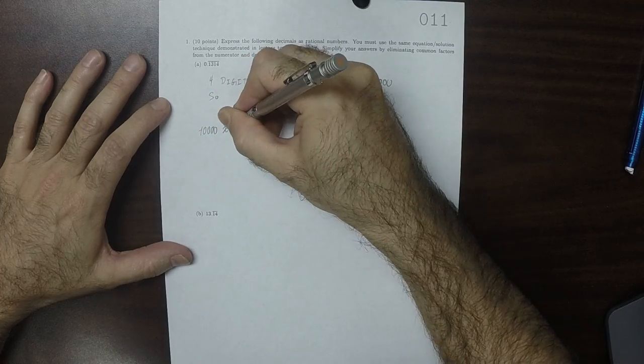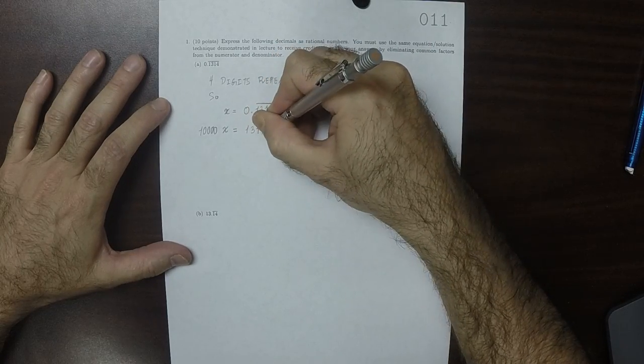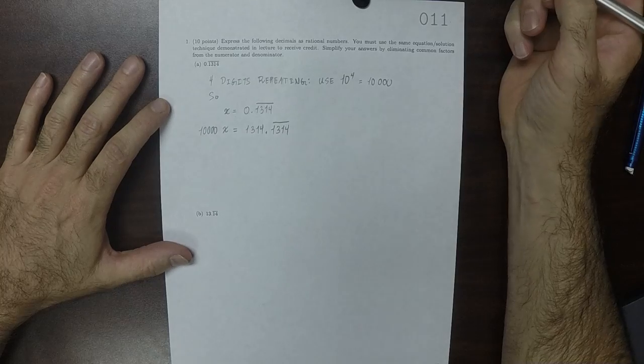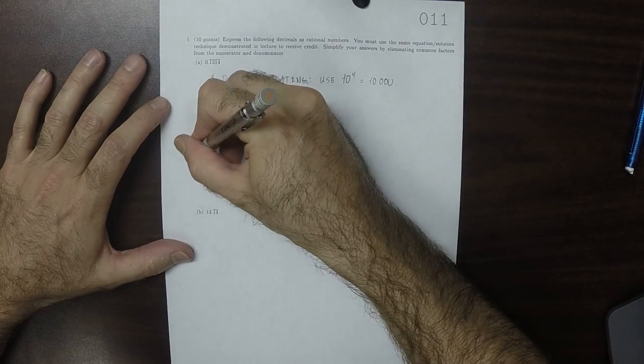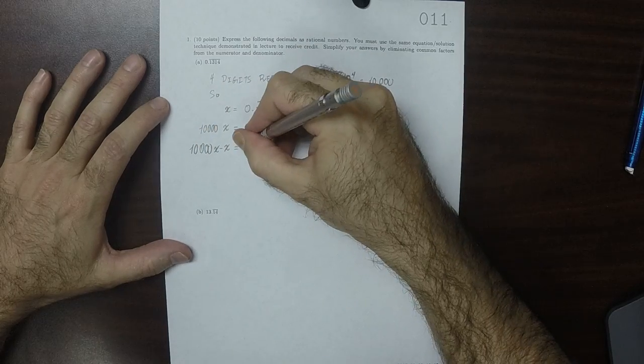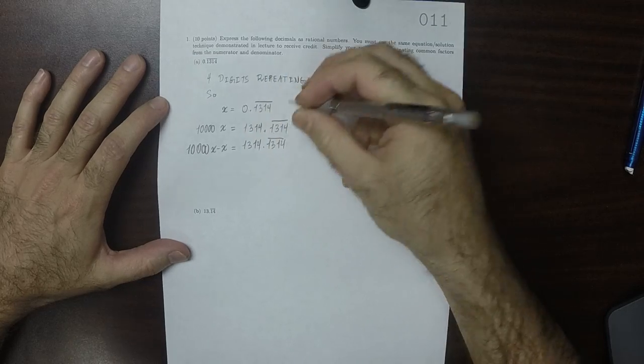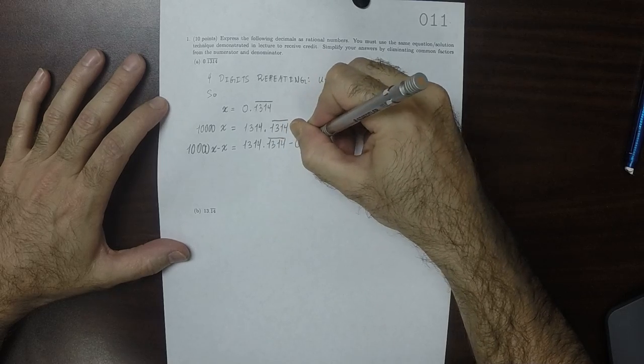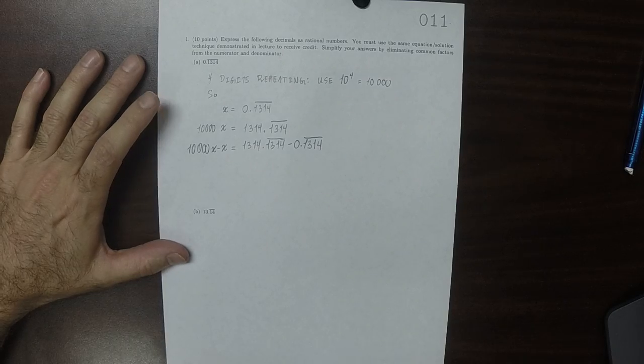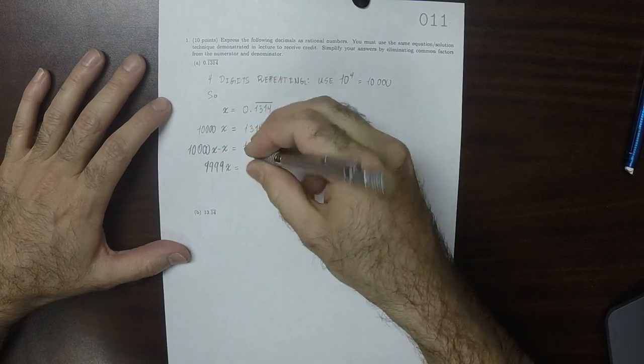Then 10,000x is 1314.1314 repeating. And if we do 10,000x and take away 1x, that will be 1314.1314 repeating minus 0.1314 repeating. So we would have 9999x is 1314.